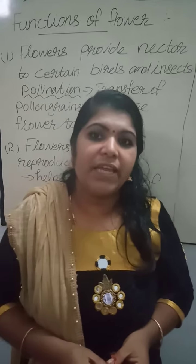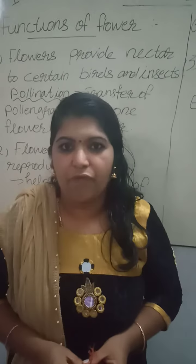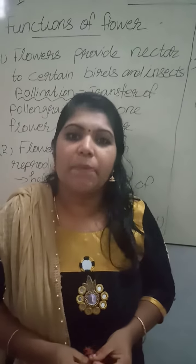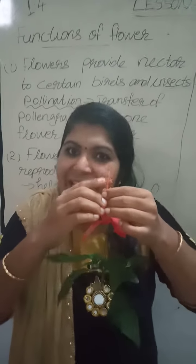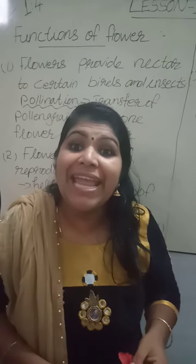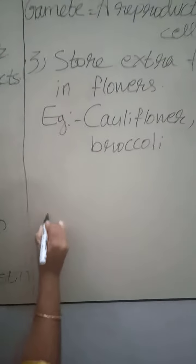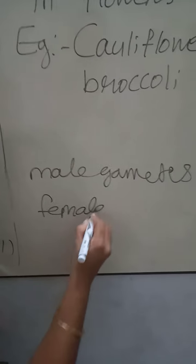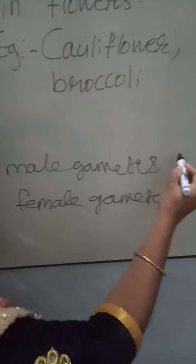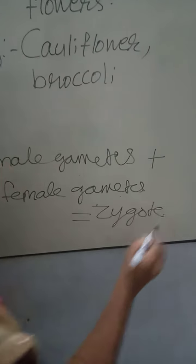Then the second function of a flower is it helps for reproduction. Do you know the term reproduction? Reproduction is a process of giving birth to their young ones. So here the stamens, the male reproductive organs, produce male gametes. Gametes means reproductive cells. And the pistil produces female gametes. So here the male gametes fuse with the female gametes to form a zygote. So this is the reproduction.